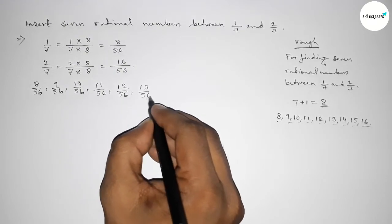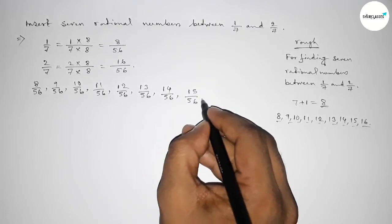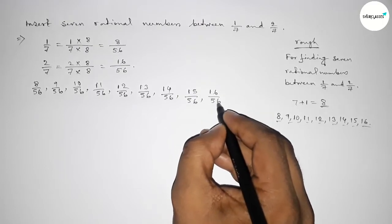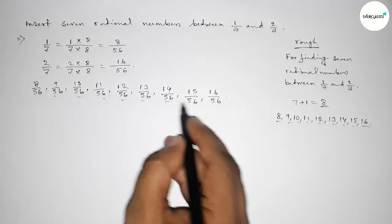13/56 up to last 16/56. And between these, these are the required 7 rational numbers between 1/7 and 2/7.